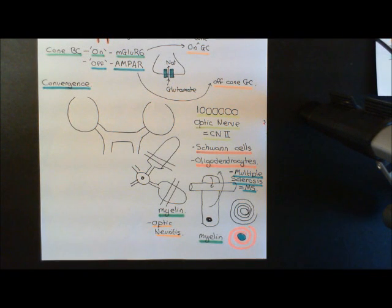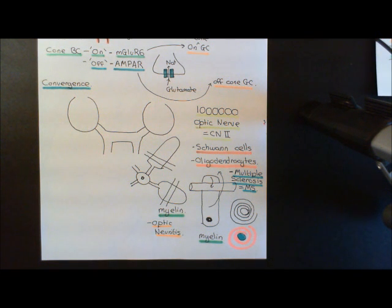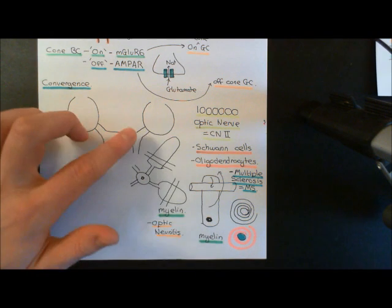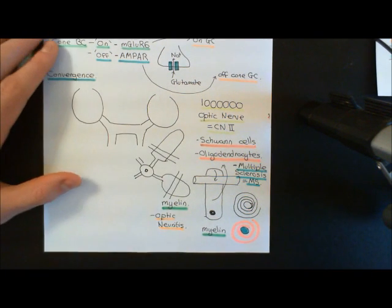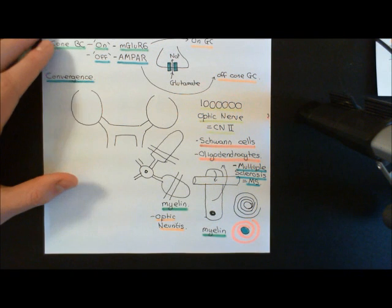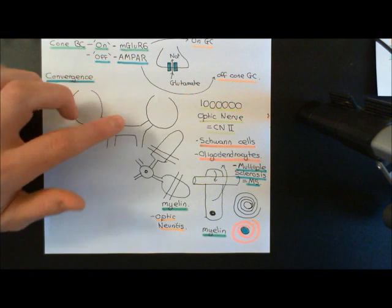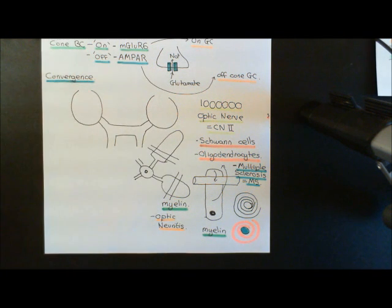Welcome to this next video in which we are discussing the visual system. The point we've got to so far is we've seen that all of the ganglion cells of the retina are going to send their axons into the optic nerve. They're going to send them towards the optic disc and then go into the optic nerve behind, all running parallel in the optic nerve.